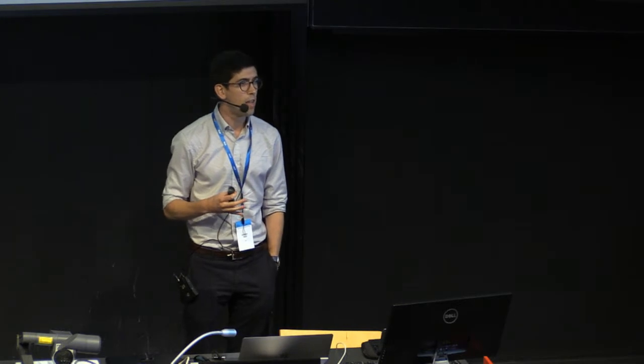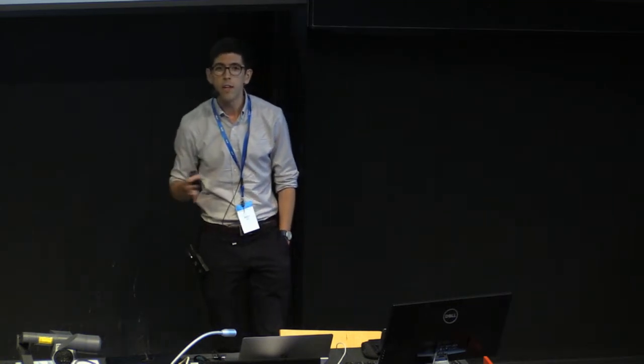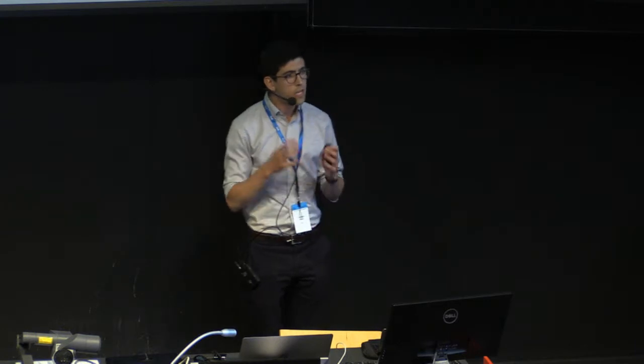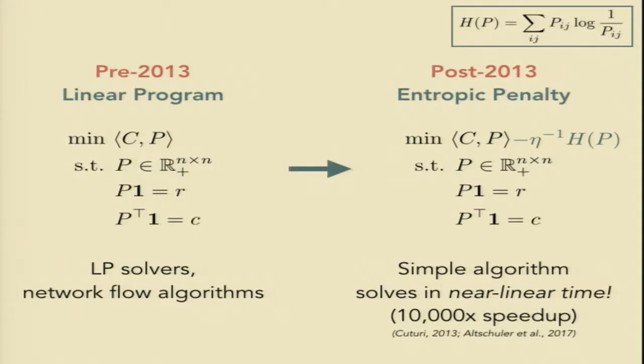in practice, this thing was tractable but slow. And so, again, it didn't really take off in the way that it has since 2013 because of this limitation. So that all changed when Marco Couturi in an influential NIPS paper from 2013 proposed instead to solve a problem with a small entropic penalty. So penalizing by the entrywise entropy of this big matrix P. This was a huge idea